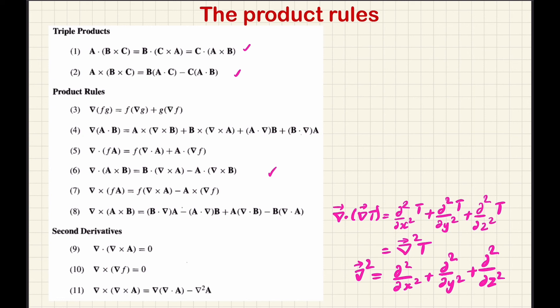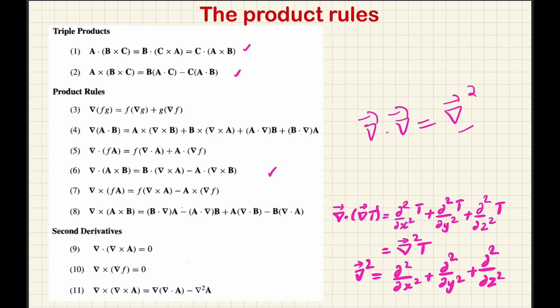Now we discuss second derivatives. Applying the del operator twice on a scalar function t: del dot (del t), which is del dot del t, gives del-squared t — this is the Laplacian operator. The Laplacian del-squared acting on t equals ∂²t/∂x² + ∂²t/∂y² + ∂²t/∂z². The del-squared operator is the second derivative form.